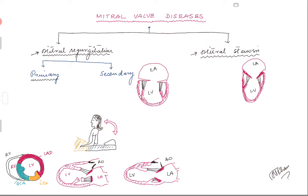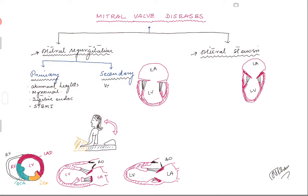Starting with mitral regurgitation: one type is called primary mitral regurgitation and another is secondary. In primary mitral regurgitation, there is an abnormality of the valve - the mitral leaflets are abnormal, from myxomatous degeneration, infective endocarditis, or ischemia/ACS/STEMI patients with complications from myocardial infarction damaging the mitral valve apparatus. In secondary mitral regurgitation, the valve leaflets are fine - it's the anatomy of the left ventricle that has changed.